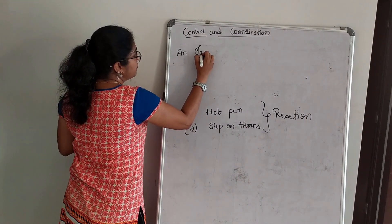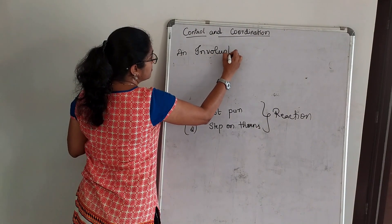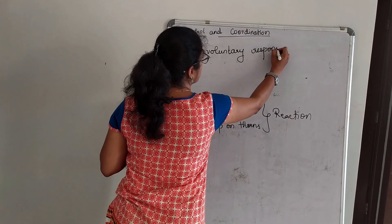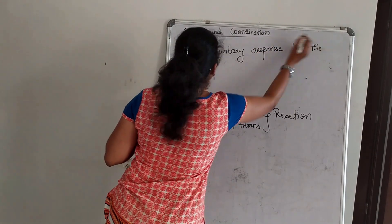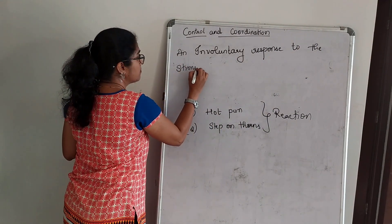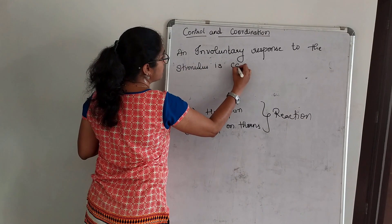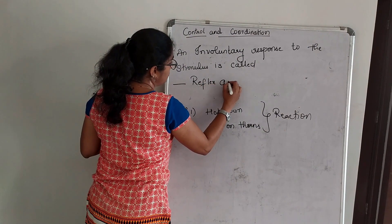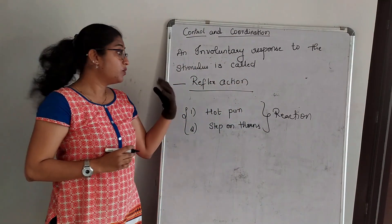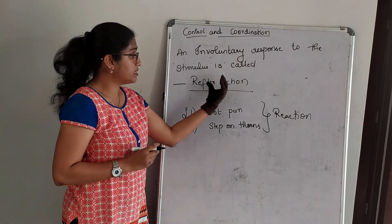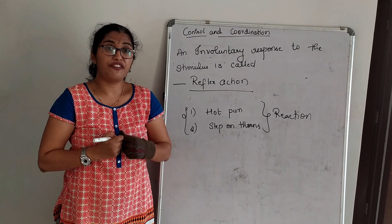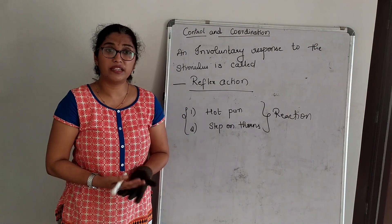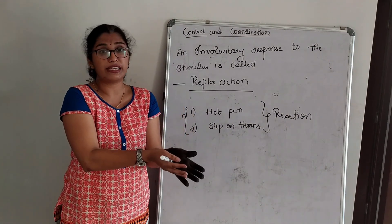An involuntary response to the stimulus is called reflex action. Now how is this reflex action — this involuntary response — different from other involuntary activities which are happening in our body? There are so many involuntary activities. The life processes chapter itself was all about involuntary activities.